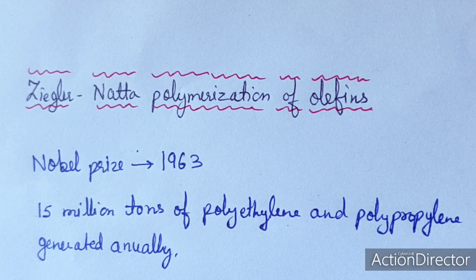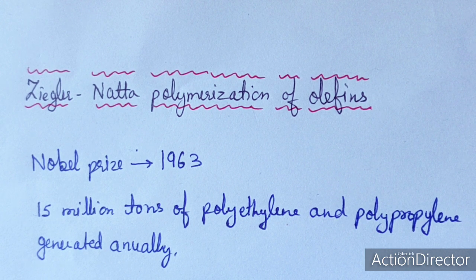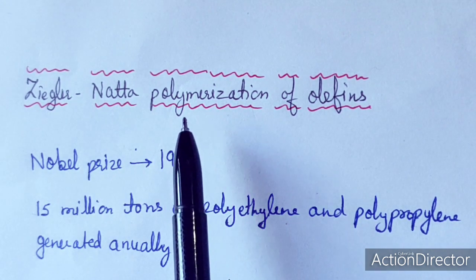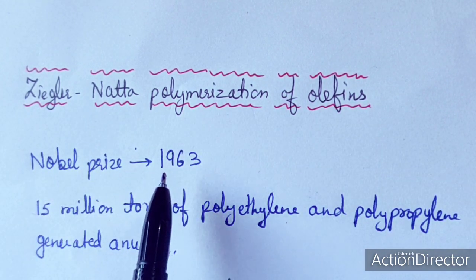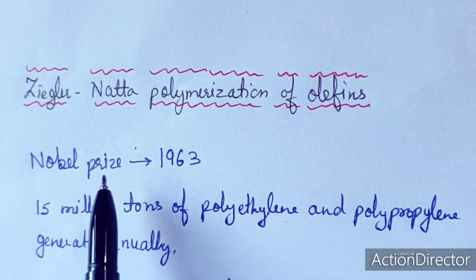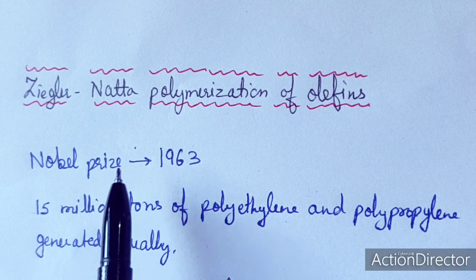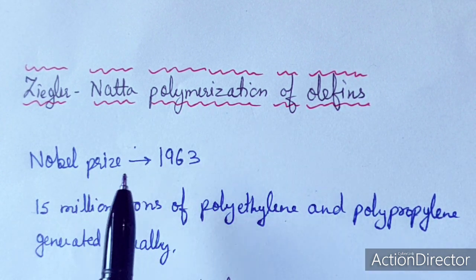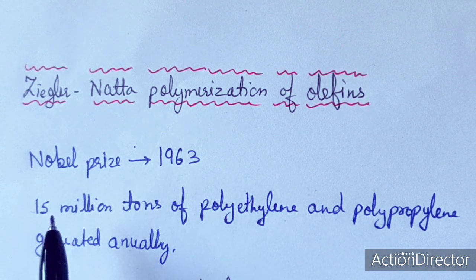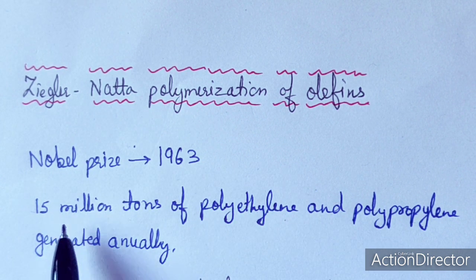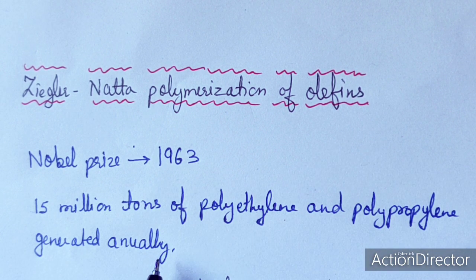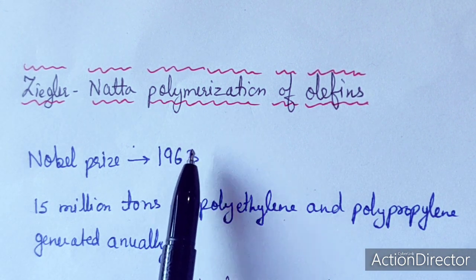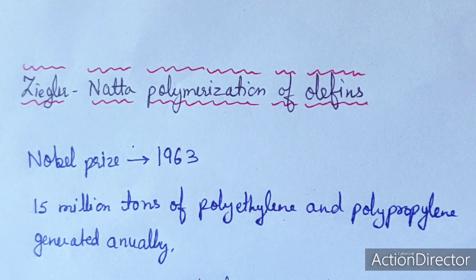Today we will discuss the Ziegler-Natta polymerization of olefins. This is an important polymerization reaction for which Ziegler and Natta in 1963 received the Nobel Prize. This discovery was helpful in synthesizing about 15 million tons of polyethylene and polypropylene annually, making it a very important polymerization reaction.